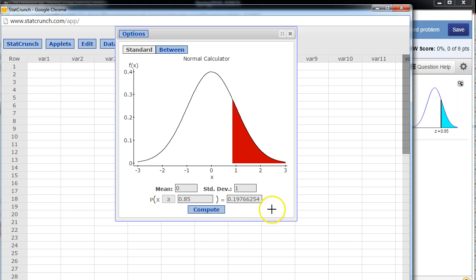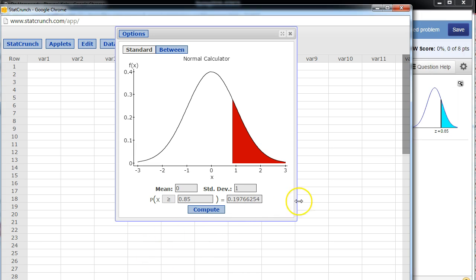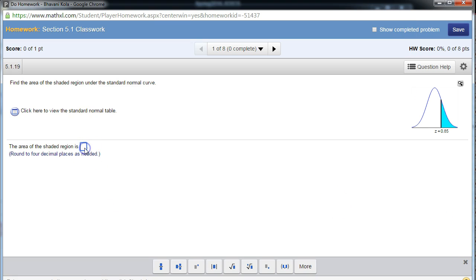So the area or the probability under the curve is 0.1976. Depending on how they're asking you to round off, you're going to go ahead and do that. Let me take a look. It says round off to four decimal places, so four decimal places it is: 0.1977. So let me go ahead and do that: 0.1977, enter. Fantastic, good job.